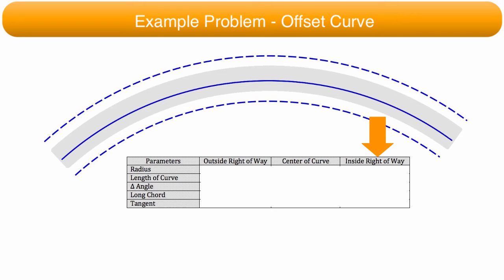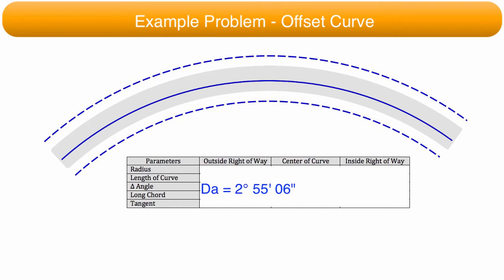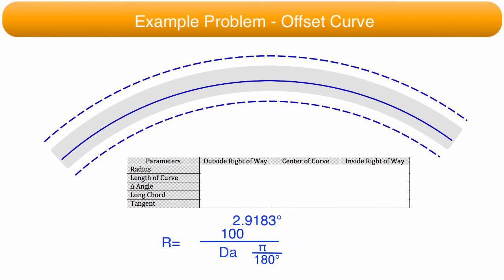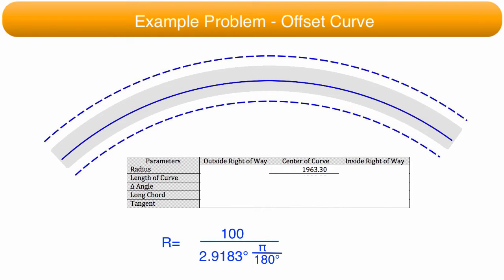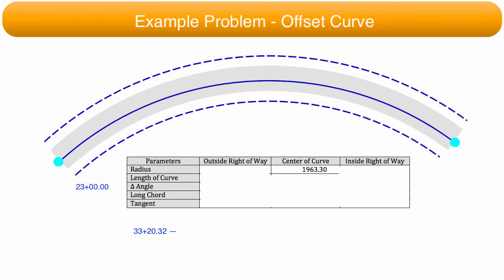The first calculation is to determine the radius for the center of the highway curve from the degree of curvature. The degree of curvature is converted to a decimal degree. The decimal degree is then inserted into the equation and the radius calculated. Once the radius is calculated, it is placed into the table. The arc length is determined by taking the difference between the PT station and the PC station, and is inserted into the table.